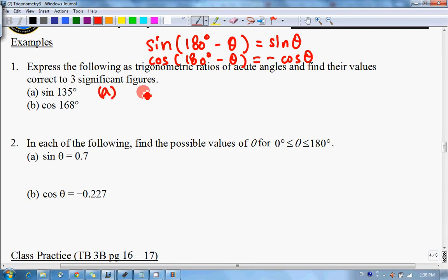For part a, sine 135 degrees, I have to change them to an acute angle. So it will be equal to sine 180 minus 135, which is actually 180 minus 45 degrees.